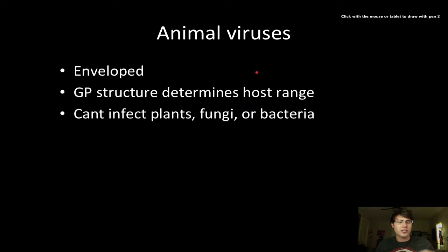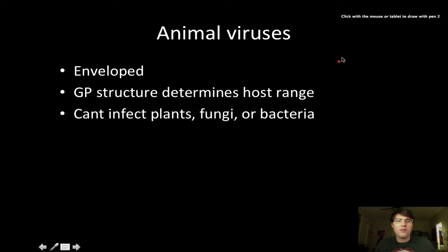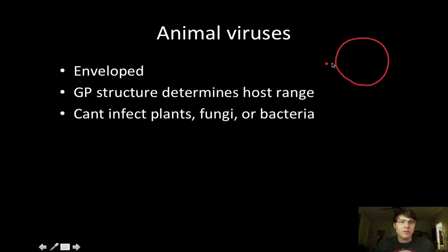Now let's switch gears and talk about animal viruses. They have an envelope — let's say there's an envelope here, with a plasma membrane inside of it, and inside of that is a viral capsid, which is something all viruses have. Then there's a genome and some glycoproteins. That's what you would have for an animal virus.